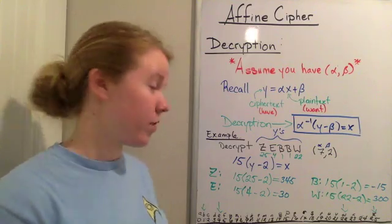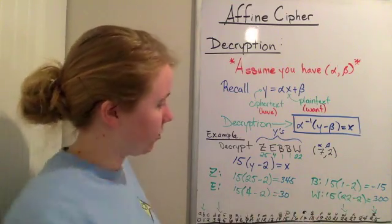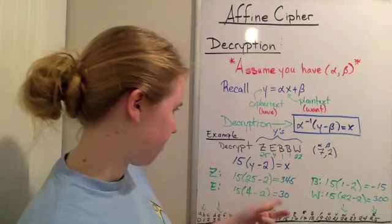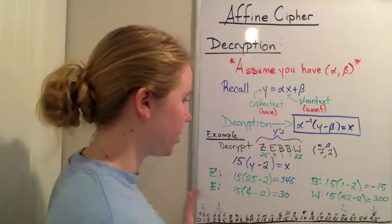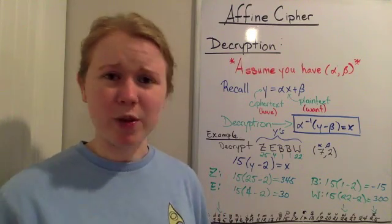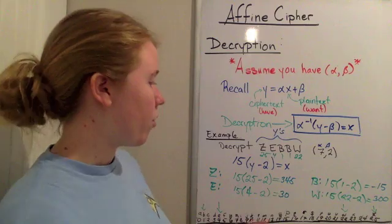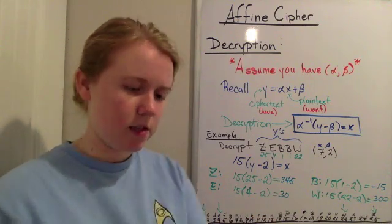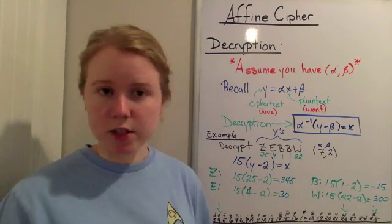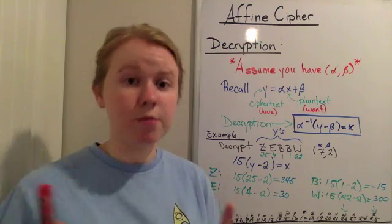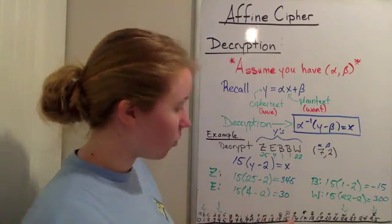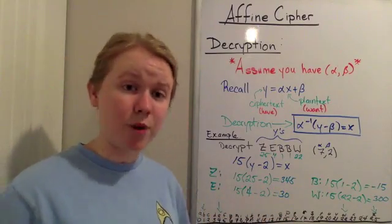Now that I have worked the math for each of these different letters, you'll notice that they're kind of all over the place. 345, 30, negative 15, 300. You might also notice that none of these actually correlate with a letter. So what we have to do in each of these cases is subtract 26, add or subtract 26, again, 26 because English alphabet, 26 characters, until we get somewhere that actually does represent a letter.